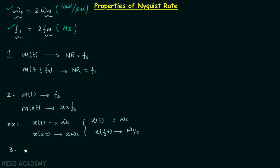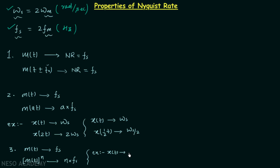In property number three, we have message signal m(t) with Nyquist rate fs. If we raise the signal to the power n, giving m(t)^n, the new Nyquist rate equals the old Nyquist rate fs multiplied by n. For example, if x(t) has Nyquist rate omega_s, then x(t)^2 will have Nyquist rate equal to 2·omega_s.